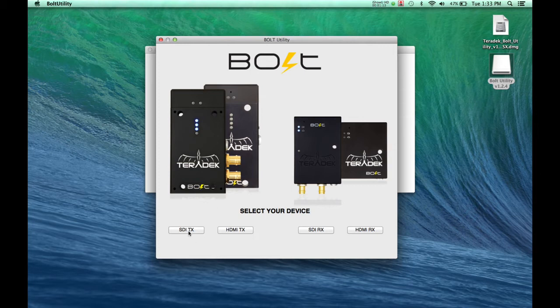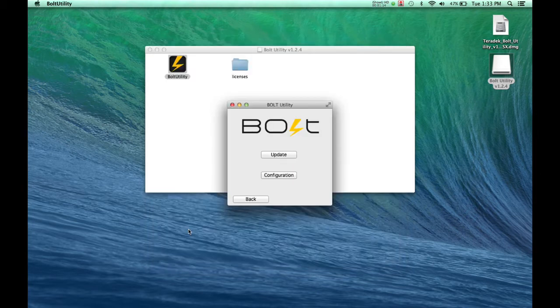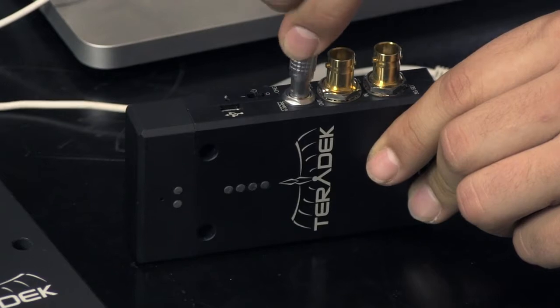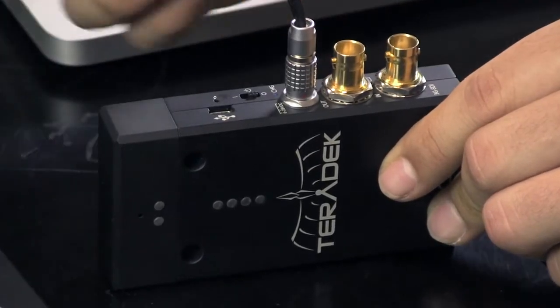Today, we have an SDI Bolt Pro. The process is similar with HDMI bolts. Select your transmitter type. Click Update Bolt. Connect power and mini USB to the Bolt transmitter.